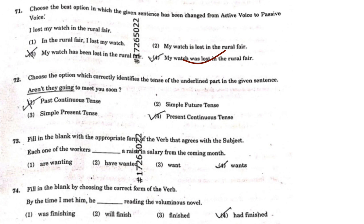This is an easy question. 'Aren't they going?' — present continuous tense is the correct answer for question 72.